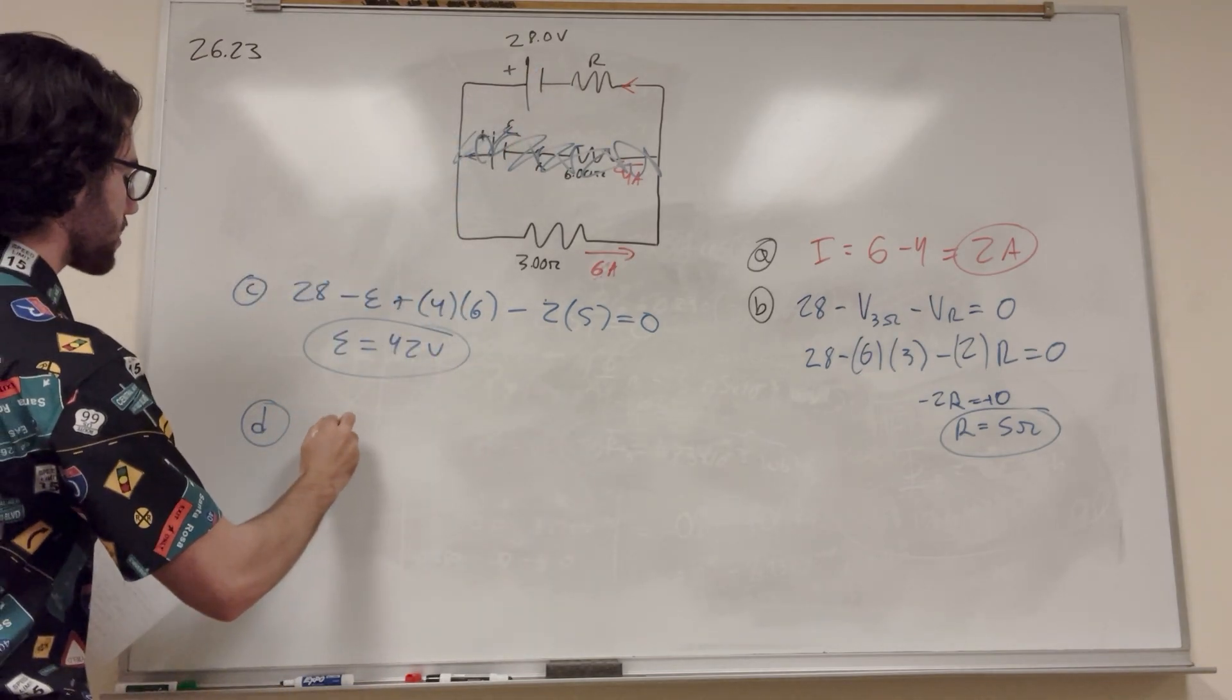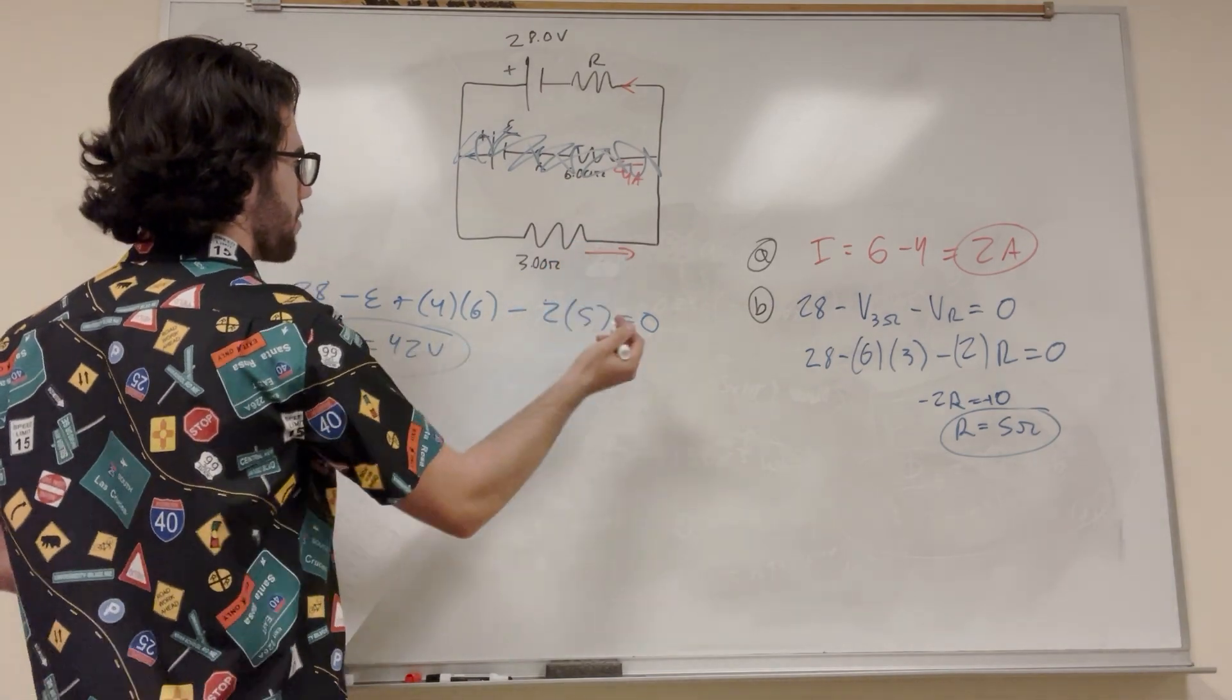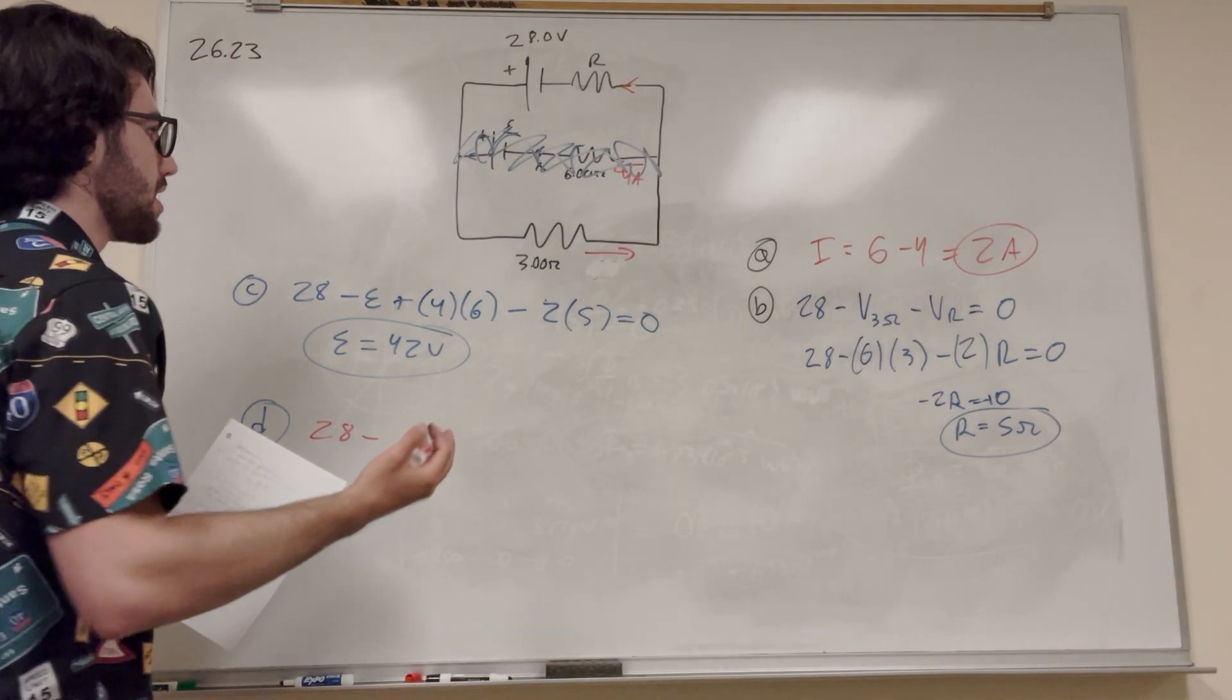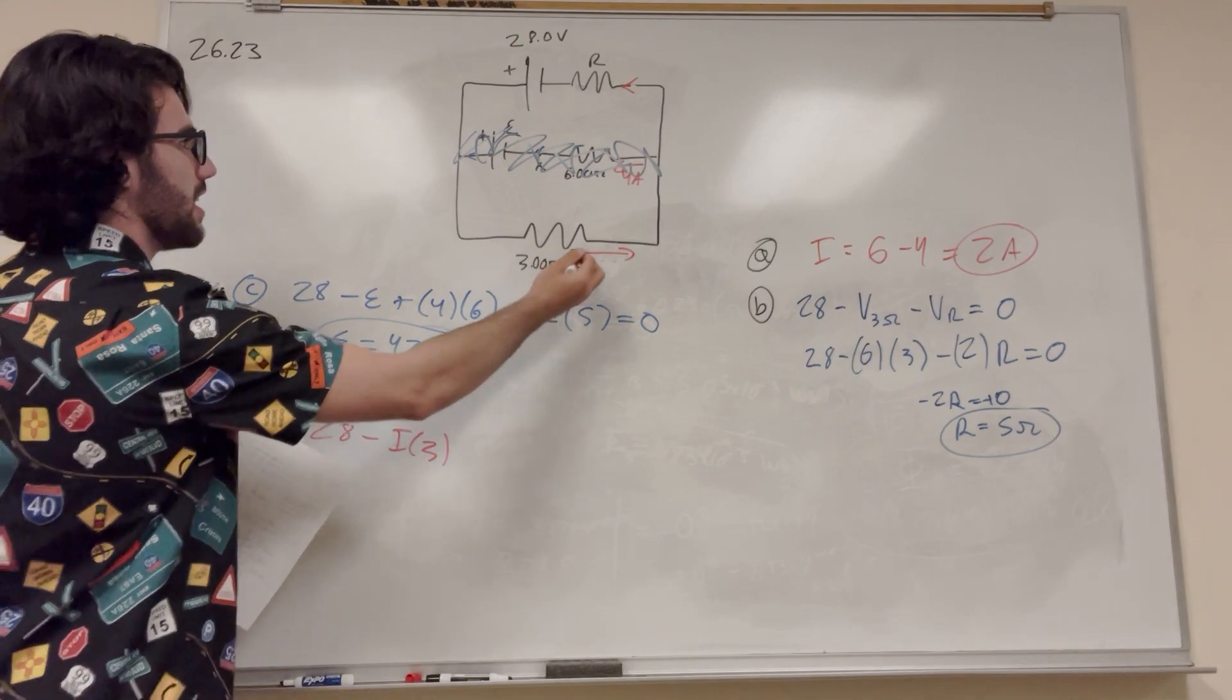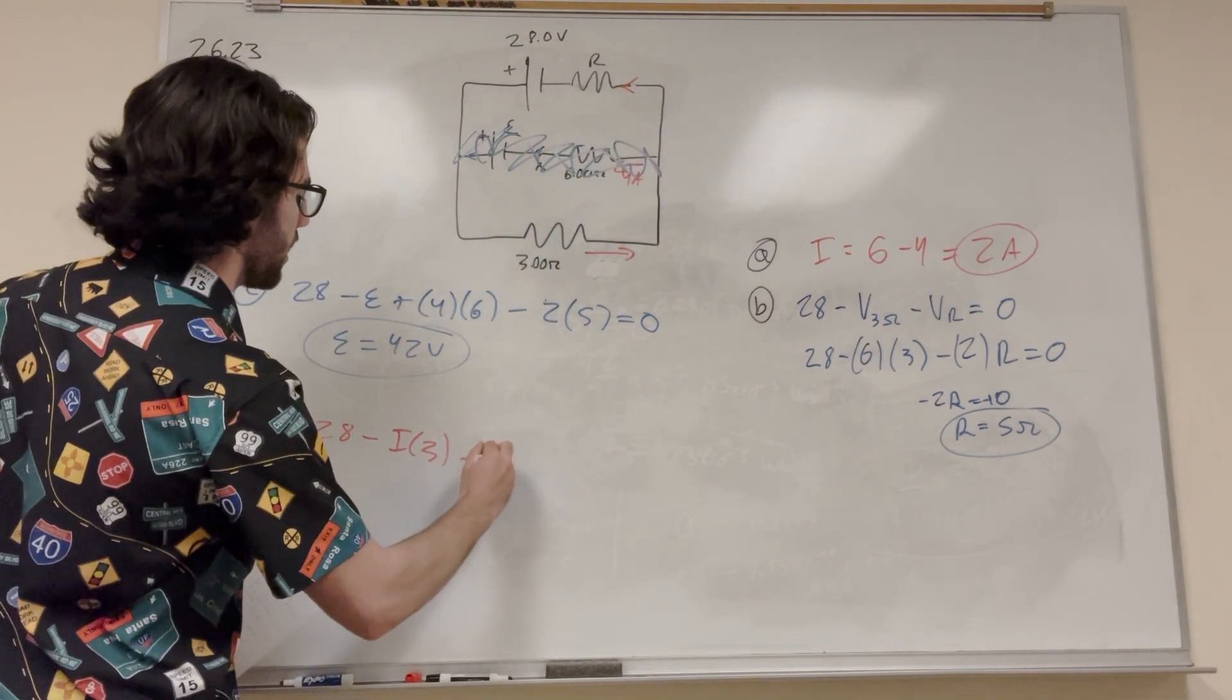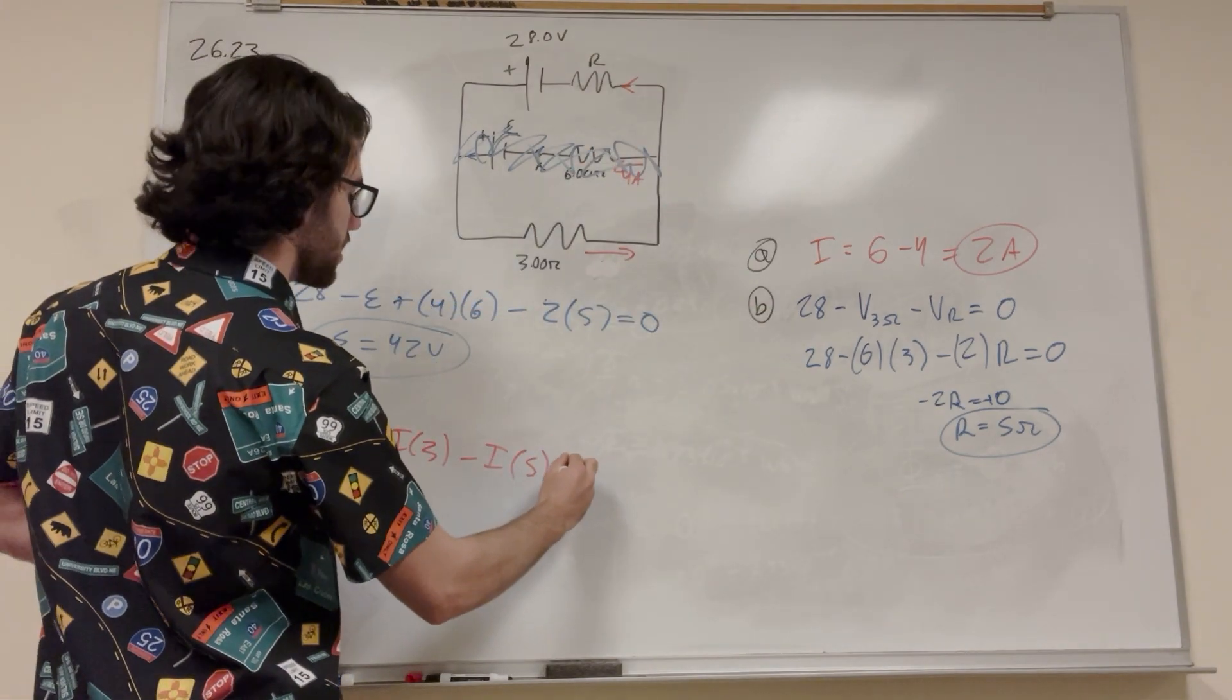So let's do 28 volts, and then we're going to go around. So this is going to be IR. But we don't know what the current is anymore. But we know that all of this is going to have the same current, because it's in series. So it's going to be I times our resistance is 3 for this guy. And we're going to go up here, and we're going to go through this resistor. So it's going to have I. But then its resistance, we know its resistance is going to be 5, is equal to 0.